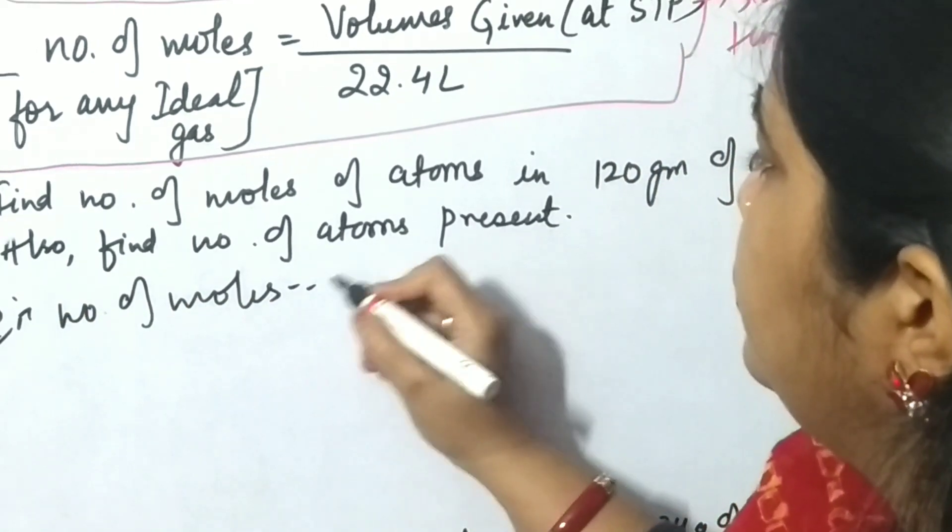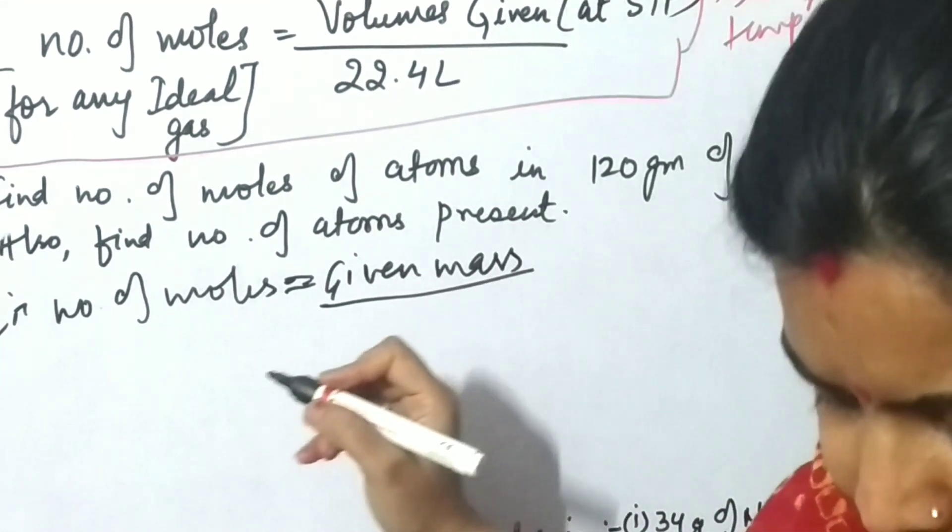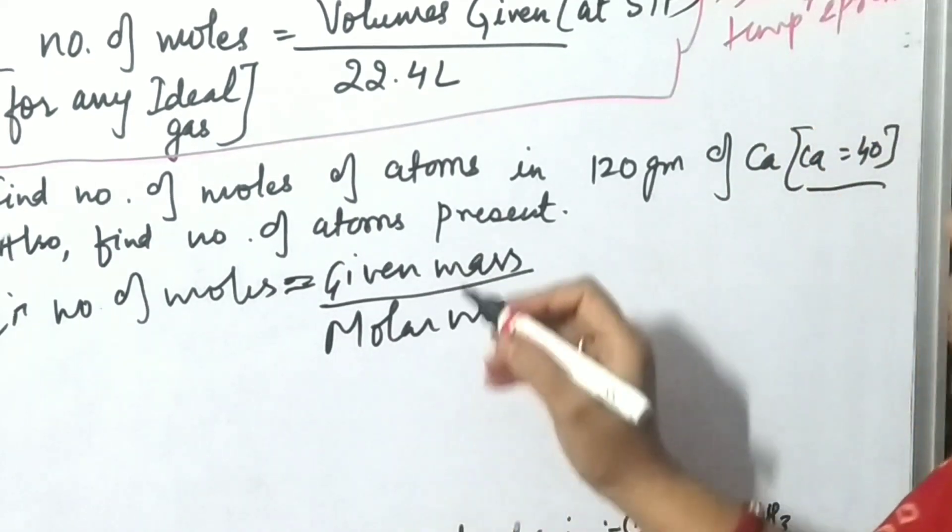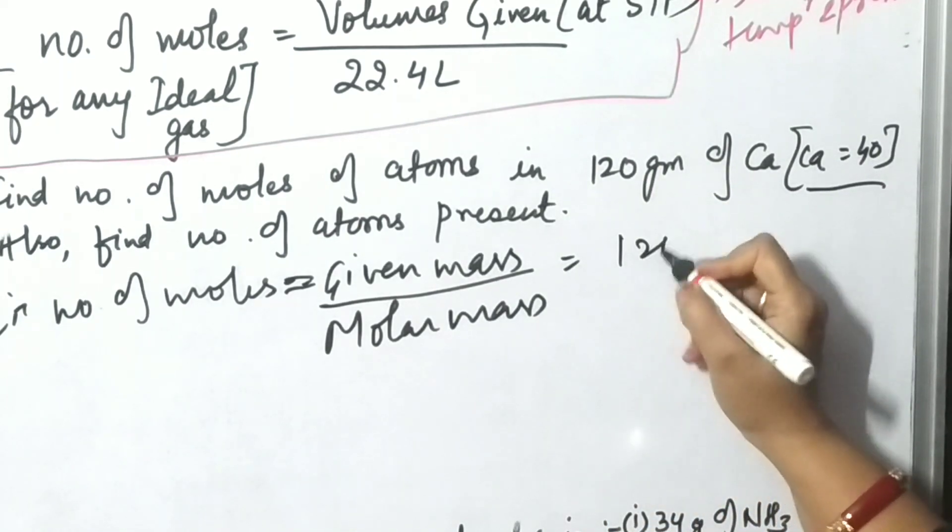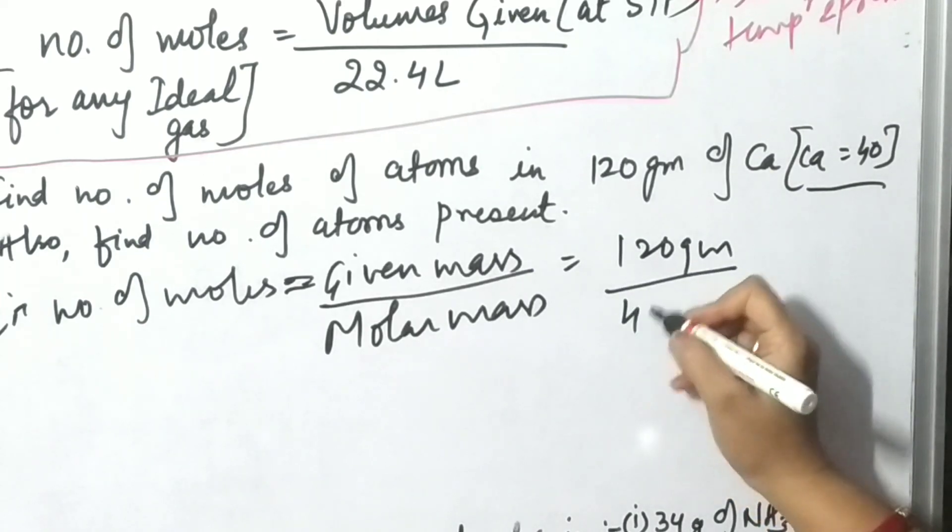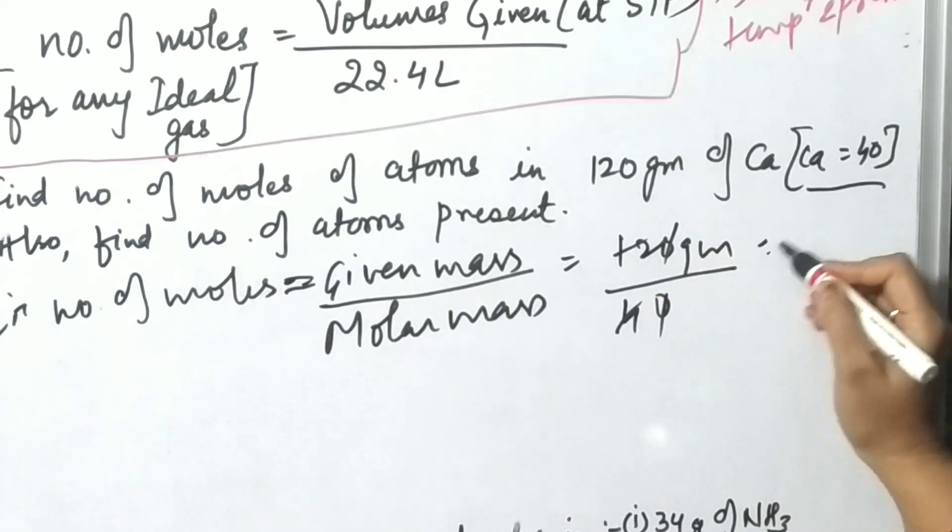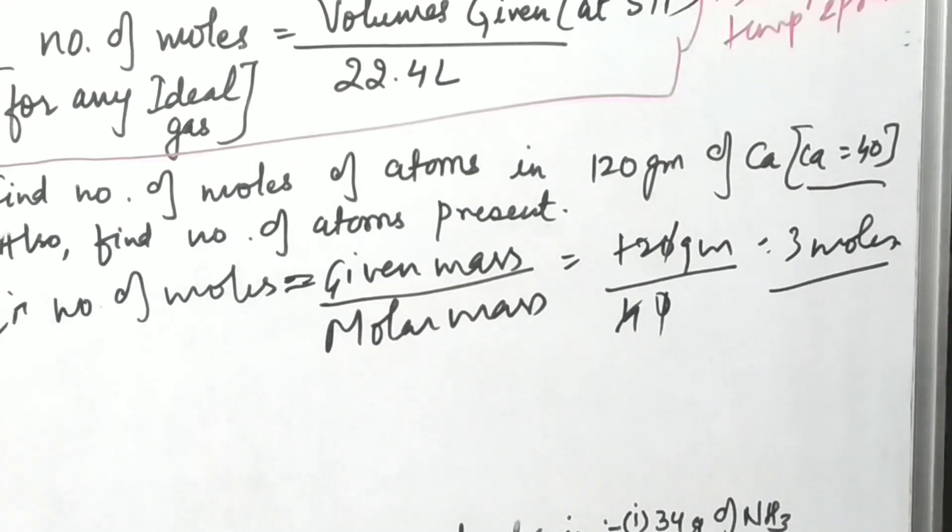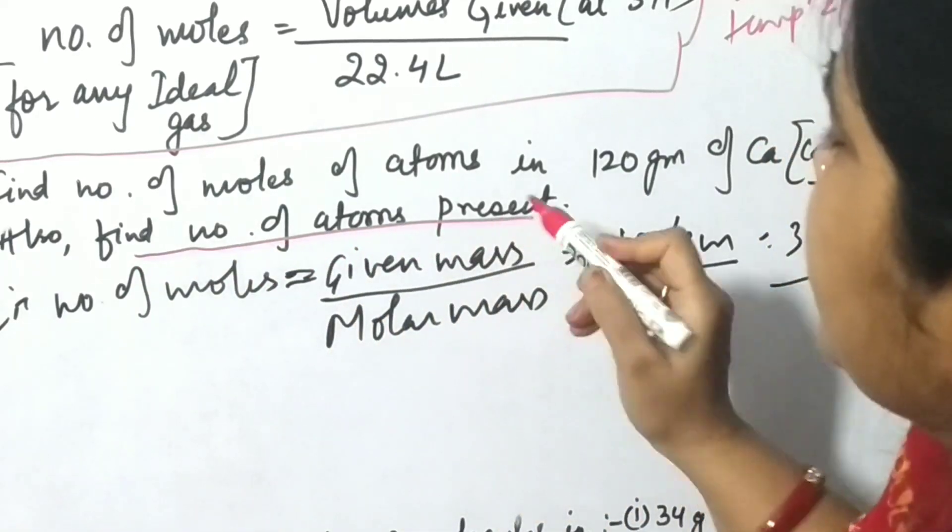Number of moles equals given mass by molar mass. So here in this question, given mass is 120 gram and molar mass is 40 gram, so the value will be 3 moles. We have got 3 moles as its value. Now in the question, what we have to find out is the number of atoms present.